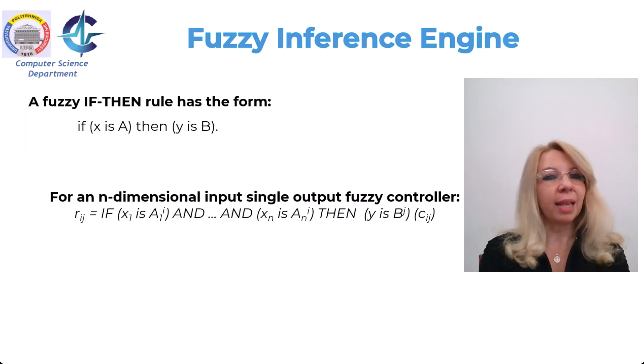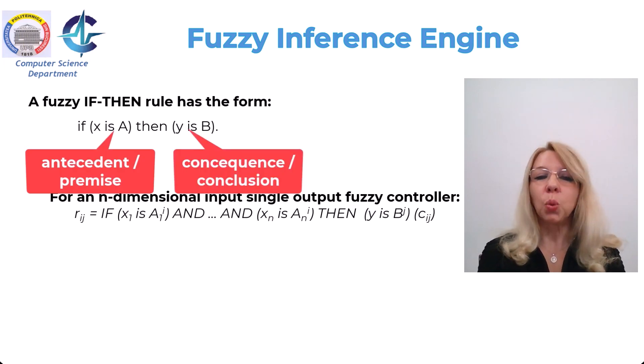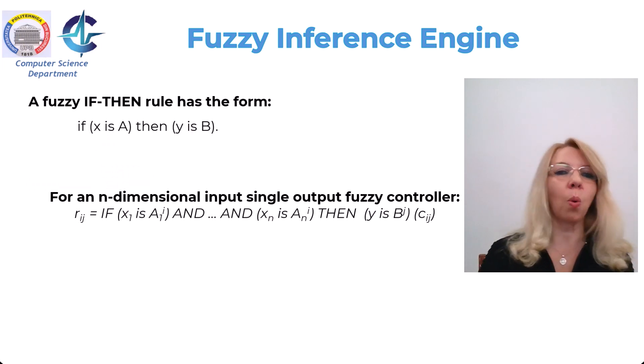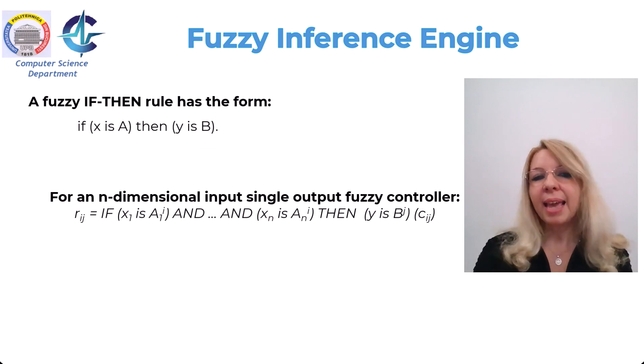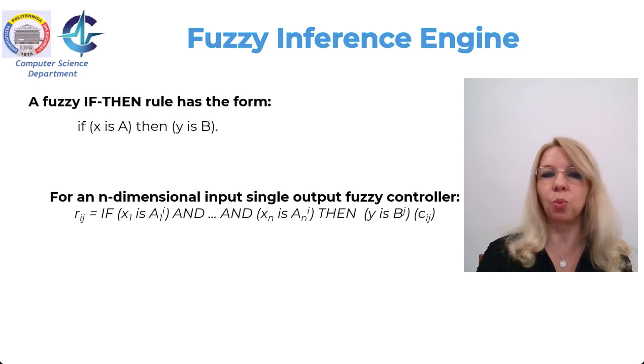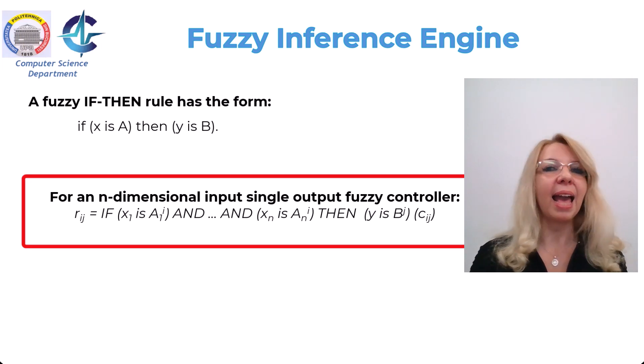A fuzzy if-then rule has the form: if X is A, then Y is B. Here, A and B are linguistic values defined by fuzzy sets on universes of discourse X and Y respectively. X is A is called the antecedent, or the premise. Y is B is called the consequence, or the conclusion of the rule. The above expression can be also translated as A implies B and describes the relation between two variables X and Y. This means that a fuzzy if-then rule can be defined as a binary fuzzy relation R on the product space X by Y.